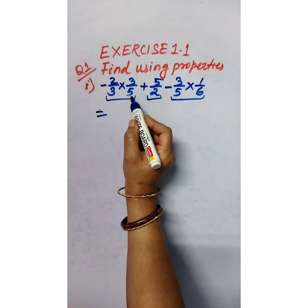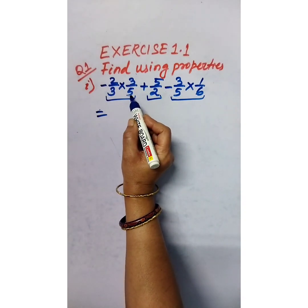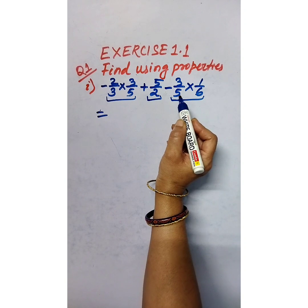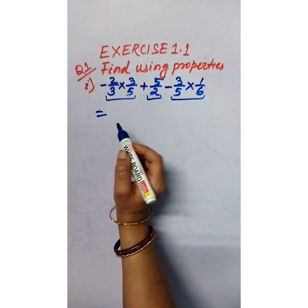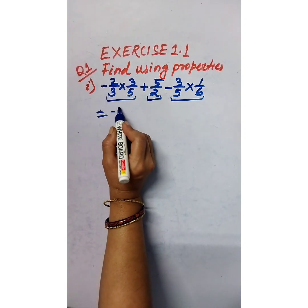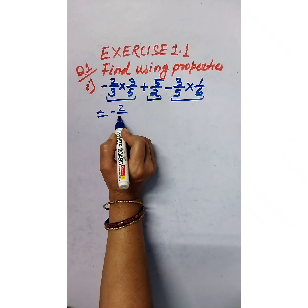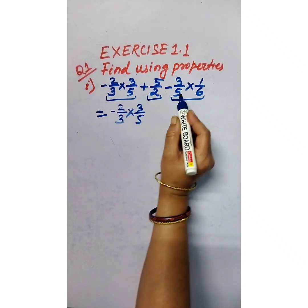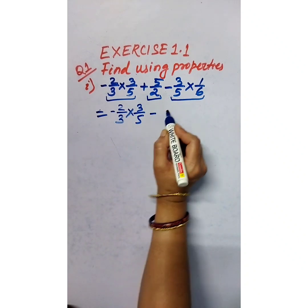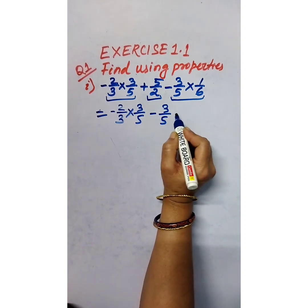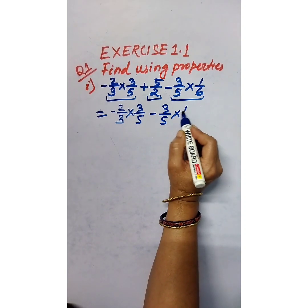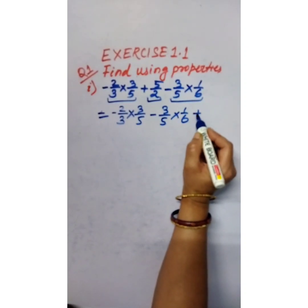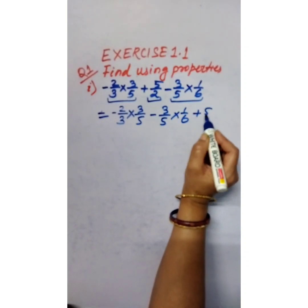But 3/5 is common to the first term and the last term. So let us bring together those two terms: negative 2/3 into 3/5, and negative 3/5 into 1/6, and keep the 5/2 term separate.